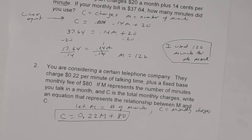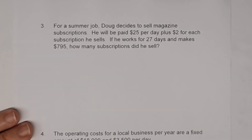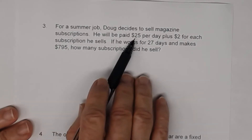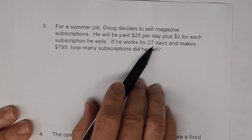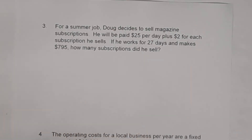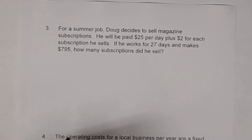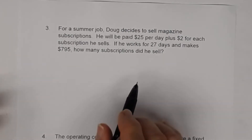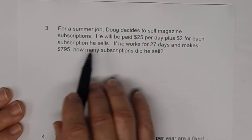Let's look at number three. For a summer job, Doug decides to sell magazine subscriptions. He will be paid $25 a day plus $2 for each subscription he sells. He works for 27 days and he makes $795. So how many subscriptions did he sell? We want to set up a linear equation just like we did in number one. He works for 27 days and makes $795.